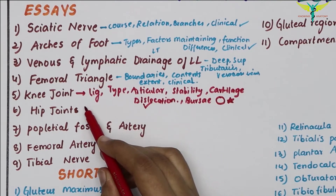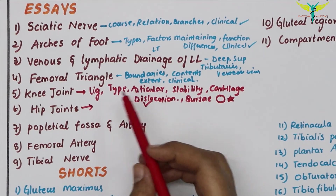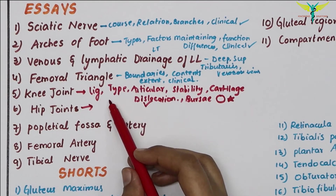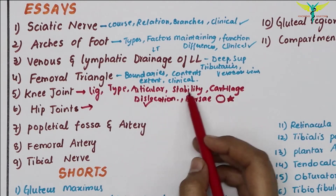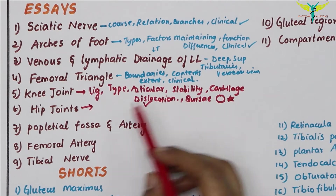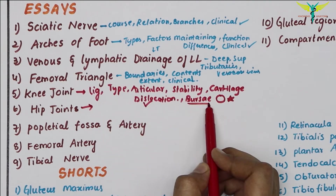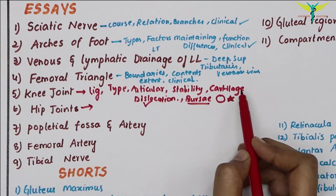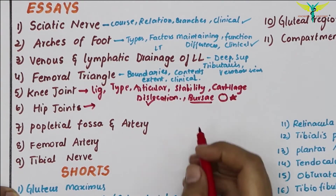The next essay question is the hip joint, following the same headings: the type of joint, the ligaments, factors providing stability to the hip joint, the bursae around the hip joint, and the cartilages.